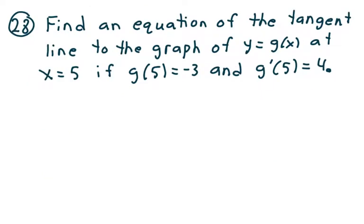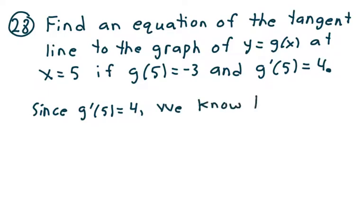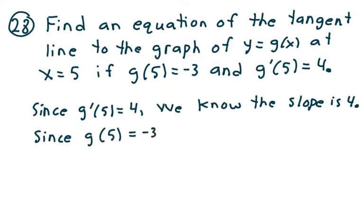Looking at problem 28: find an equation of the tangent line to the graph of y equals g of x at x equals 5, if g of 5 is negative 3 and g prime of 5 is equal to 4. Same idea as problem 27— to find the equation of the tangent line, we need a slope and a point. Since g prime of 5 equals 4, the slope is 4. And since g of 5 equals negative 3, the point is (5, negative 3).